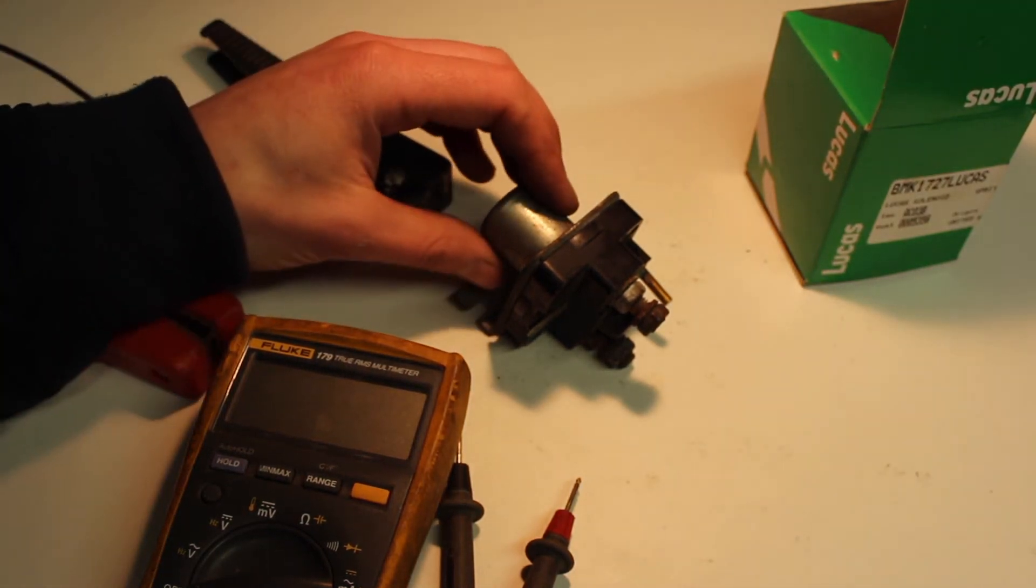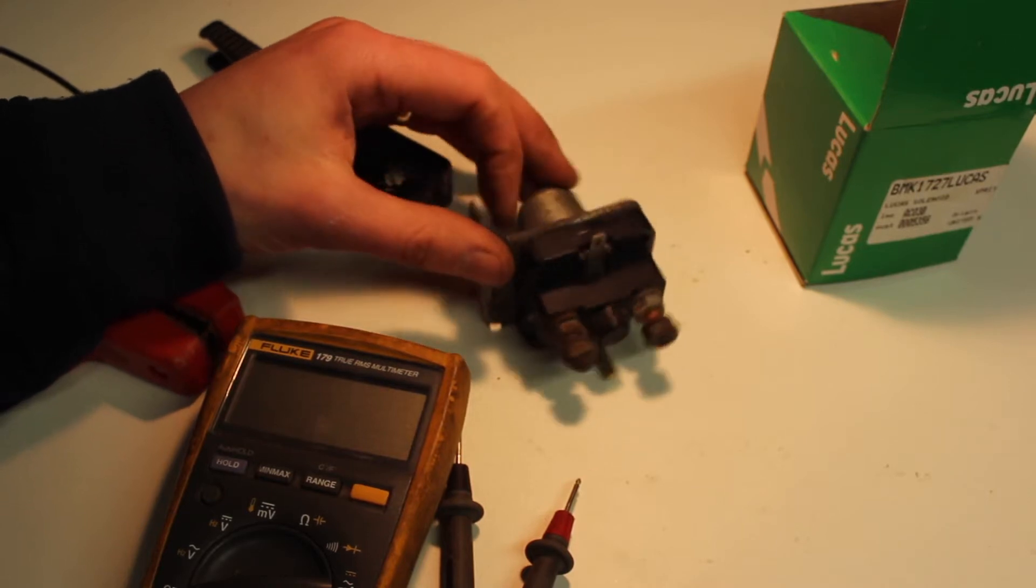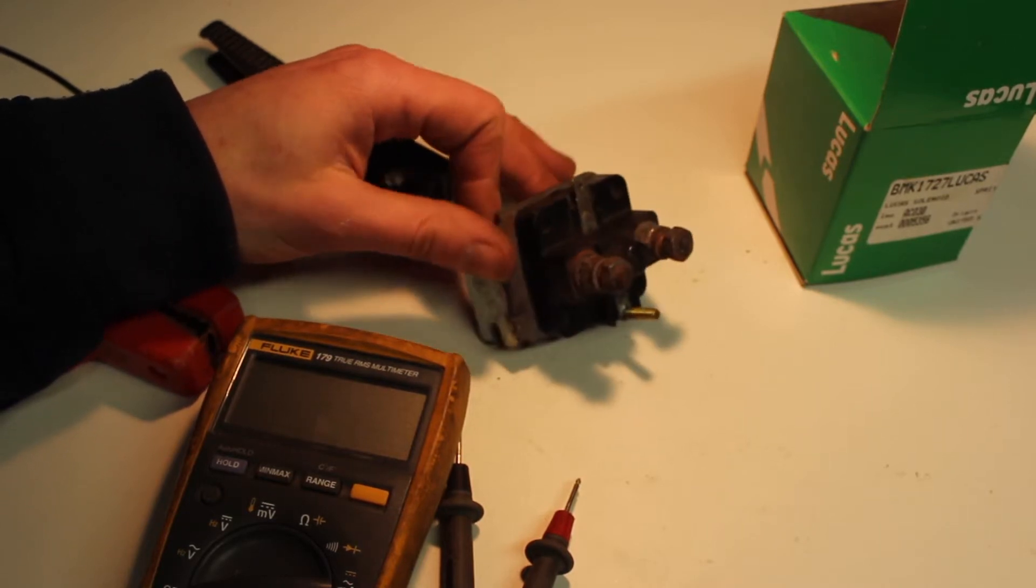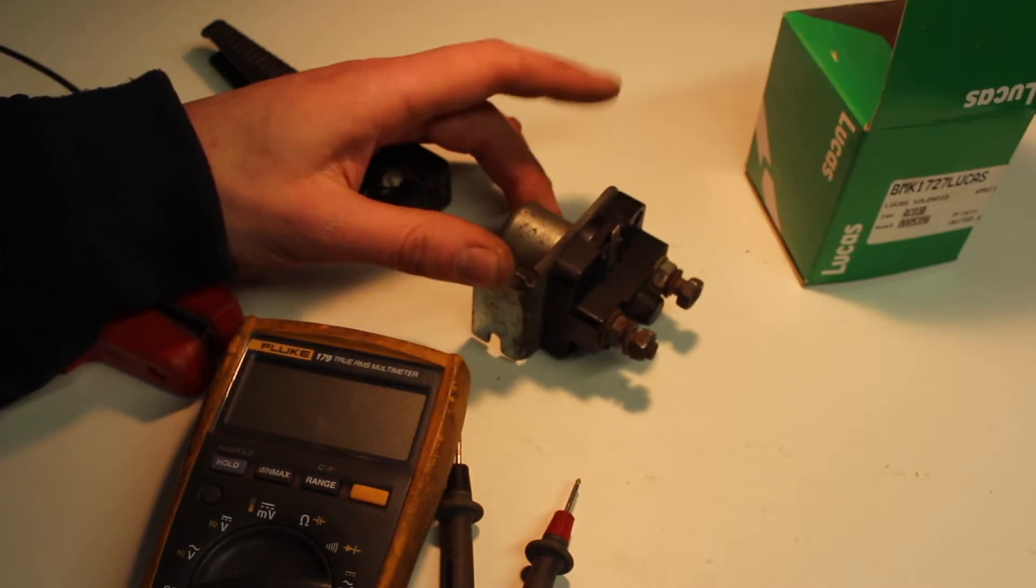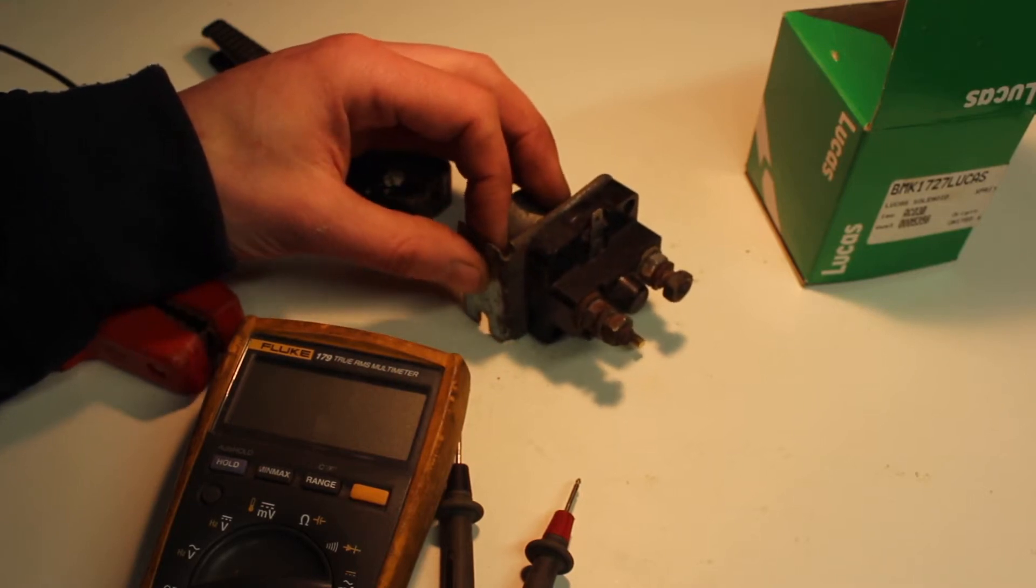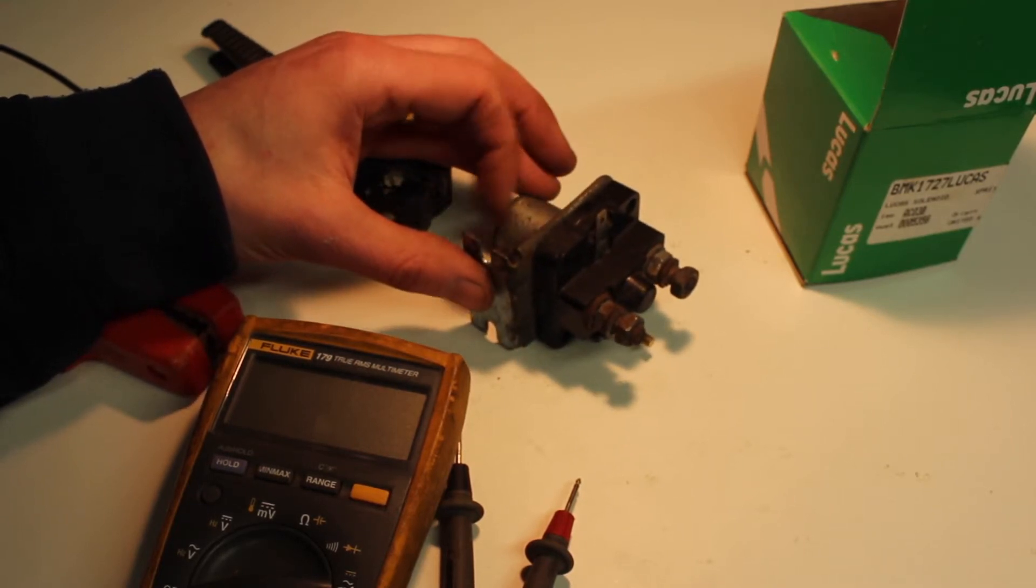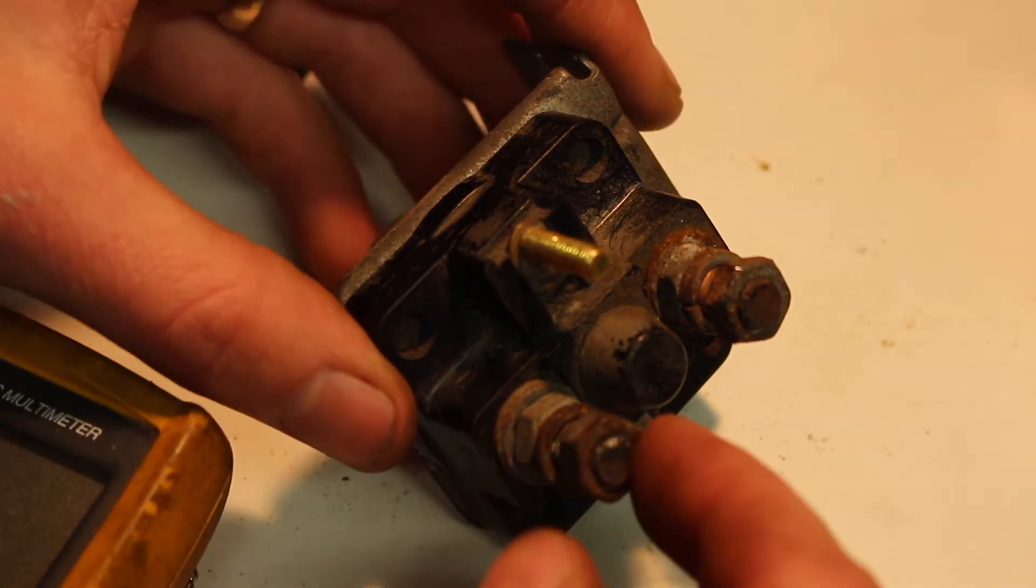Hey folks, in this video I'm going to show you how to test a starter solenoid. This is a fairly typical starter solenoid, a Lucas solenoid from an old Ford Capri. These sort of solenoids were used right up until maybe 10 or 15 years ago until starter motors came with a built-in solenoid in them.